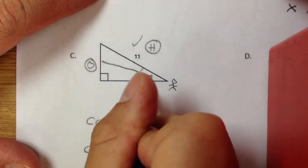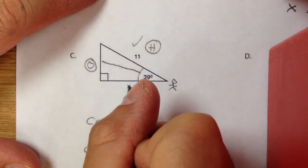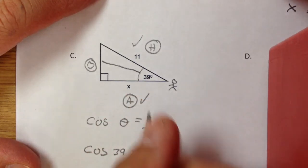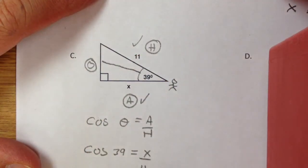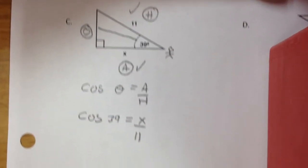The angle is the angle we're looking at, which is 39 degrees. The A is X because we don't know what it is, and the H is 11. The next thing you've got to do is solve for X.